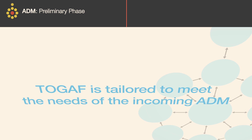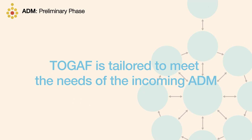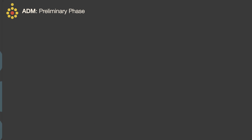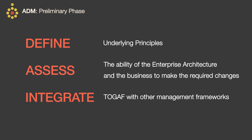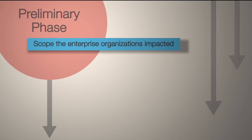In this phase, TOGAF is tailored to meet the needs of the incoming iteration of the ADM. We define underlying principles, assess the ability of the enterprise architecture and business to make the required changes, and integrate TOGAF with other management frameworks. There are steps in this phase to scope the enterprise organisations impacted by the proposed changes.